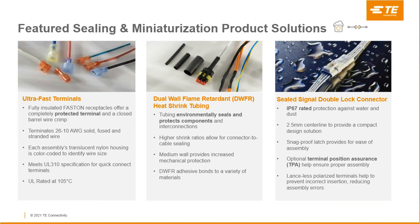Looking at specific product families that meet customer needs, let's first look at solutions addressing sealing and miniaturization. On the left you can see TE's fully insulated fast-down receptacles that offer fully protected terminals, a closed-fire crimp, and are rated for 105 degrees Celsius. These quick disconnects can terminate solid, fused, and stranded wire ranging from 26 to 10 AWG. To improve manufacturability, the translucent nylon housings are color-coded according to wire size.